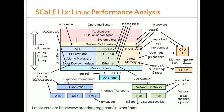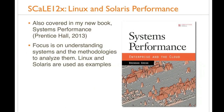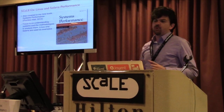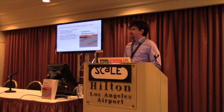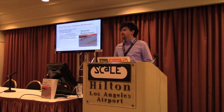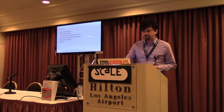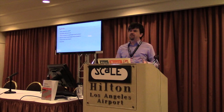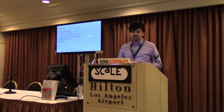Last year at SCaLE I gave a talk on Linux performance analysis that was really awesome, and I came up with a diagram people loved — I've put an updated version on my homepage. This year I'm talking about Linux and Solaris performance differences, which I covered in my new book, Systems Performance, released late last year. This talk will start with why systems differ, get into specific differences, cover what Solaris can learn from Linux, what Linux can learn from Solaris, and what both can learn.